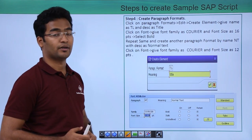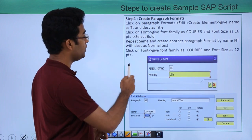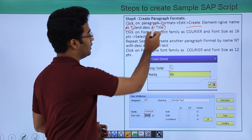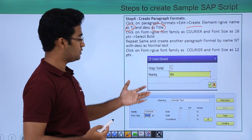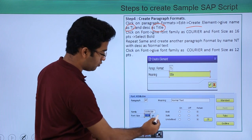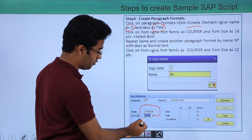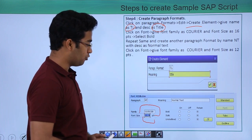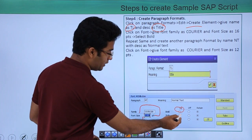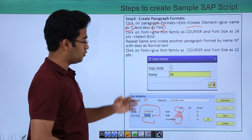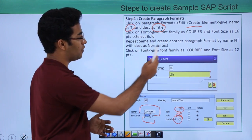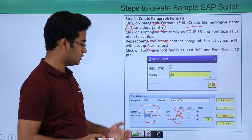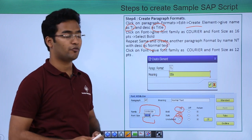Now we create our paragraph formats. We create an element and provide the name TL with description as title. When done, we change the font family to courier and font size to 12 pixels. We can also make it bold, italic, and underlined. Then we create another paragraph format named NT with description as normal text, and we can also change the font family and size for this one.